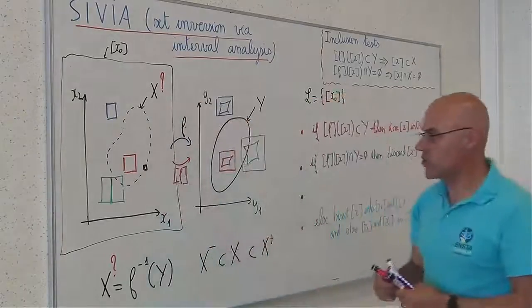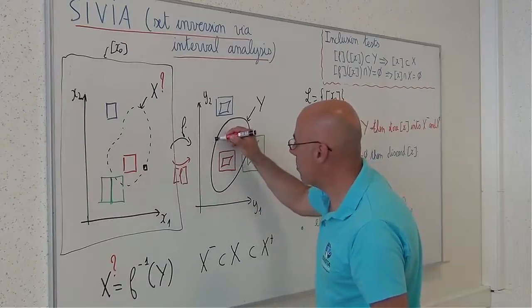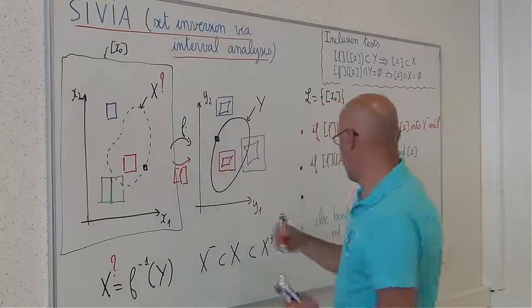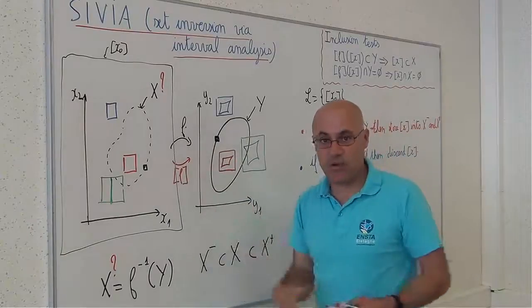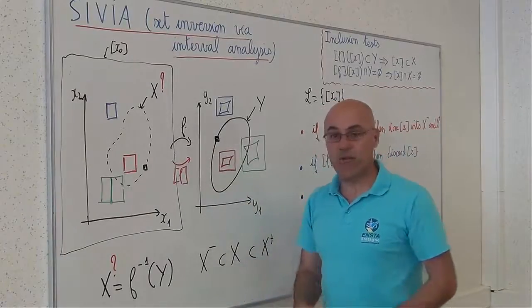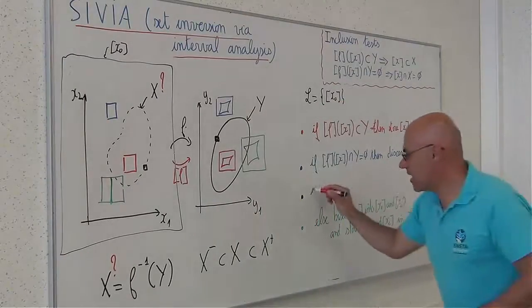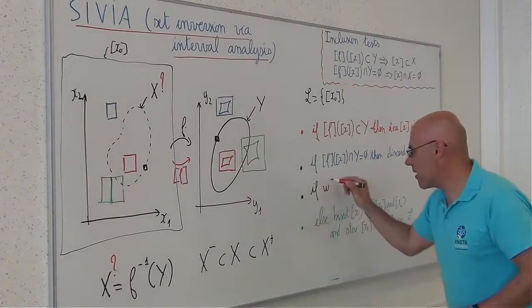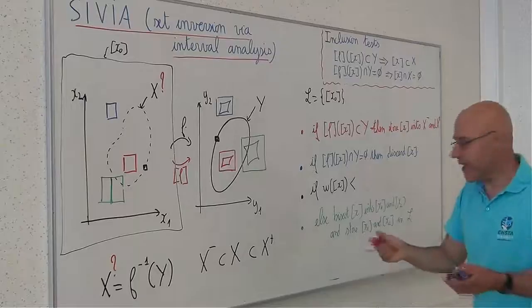In such a case, what happens? The image of this one is small, I cannot conclude anything, and I will have to stop bisecting, otherwise my algorithm will never terminate. So, in such a case, if the width of x is smaller than a small number, say epsilon,